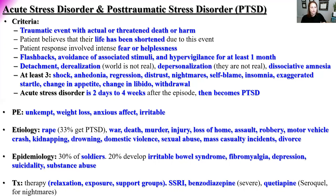Diagnostic criteria require at least three of the following: shock, anhedonia, regression (more common in children, reverting to baby-like activities), distrust of others, nightmares, self-blame, insomnia, exaggerated startle response, change in appetite (overeating or undereating), change in libido, and social withdrawal. For acute stress disorder specifically, these symptoms occur two days to four weeks after the event, then it becomes PTSD.